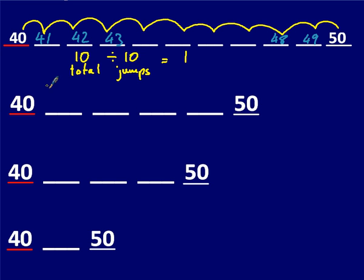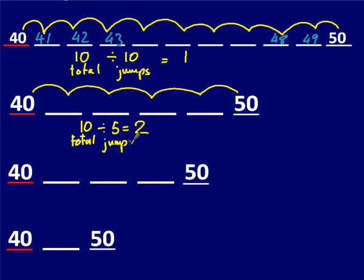So again we're going up a total of 10. And how many jumps are we making? 1, 2, 3, 4, 5 jumps. So that means each jump is worth 2. 42, 44, 46, 48.